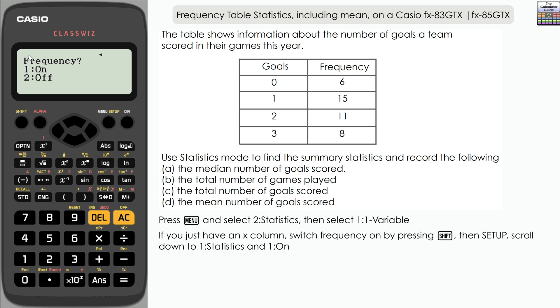We'll start by filling in the X column which are goals in this case. Input 0, 1, 2, and 3. The frequency column automatically populates with 1, but we can go back and change those to the frequency that we have in the table: 6, 15, 11, and 8.